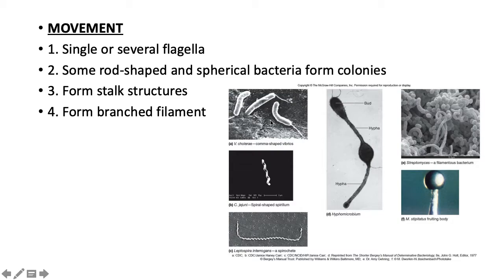Spiral-shaped or helix-like bacteria include true spirilla. Spirochetes are very delicate, fine-twisted structures. Lyme disease, syphilis, and Borrelia are all spirochete-type bacteria.